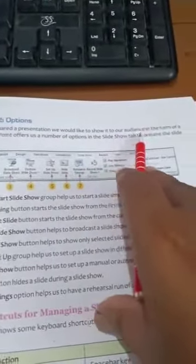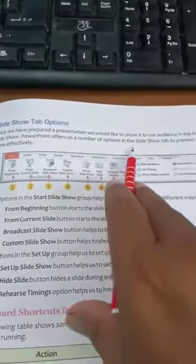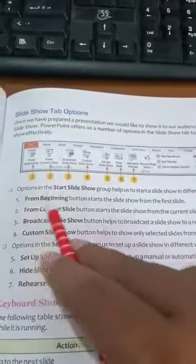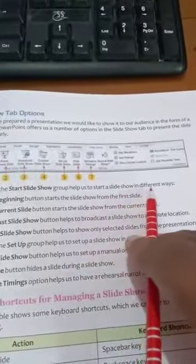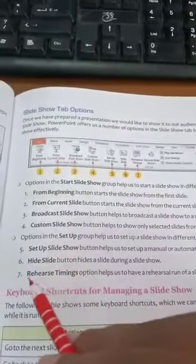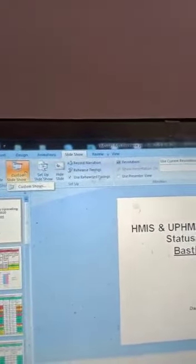Now: Slideshow Tab Options. Once we prepare a presentation, we show it to our audience as a slideshow. PowerPoint offers a number of options in the Slideshow tab to present effectively. Options include: From Beginning — starts the slideshow from the first slide; From Current Slide — starts from the current slide; Broadcast Slideshow; Custom Slideshow — helps to show only selected slides from the presentation; Setup Slide Show; Hide Slide; and Rehearse Timings.